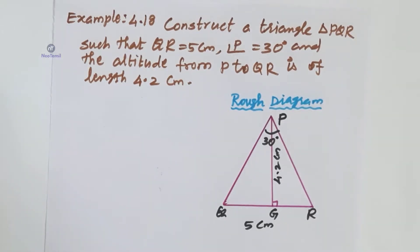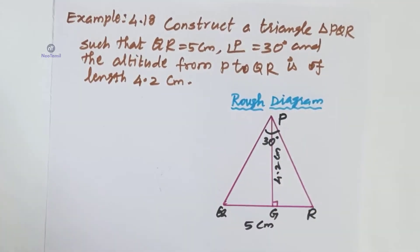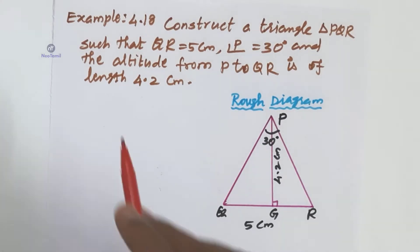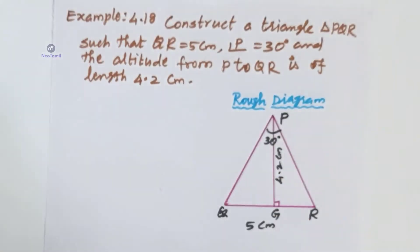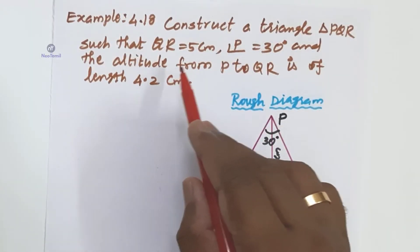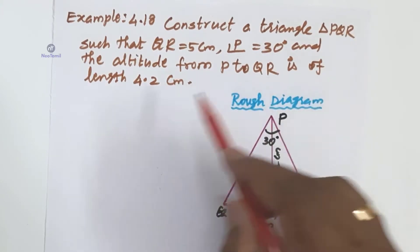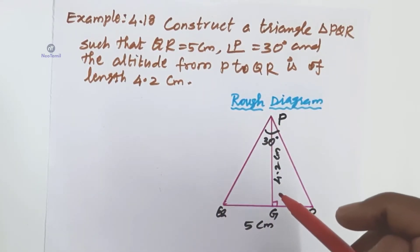In the construction of triangle, we are going to use this concept: construction of a triangle with the base, the vertical angle, and the altitude from the vertex to the base are given. Three data are given — the base length, the altitude, and the vertical angle. How can you construct a triangle? Here we are going to see Example 4.18: Construct a triangle PQR such that QR = 5 cm, angle P = 30 degrees, and the altitude from P to QR is of length 4.2 cm.